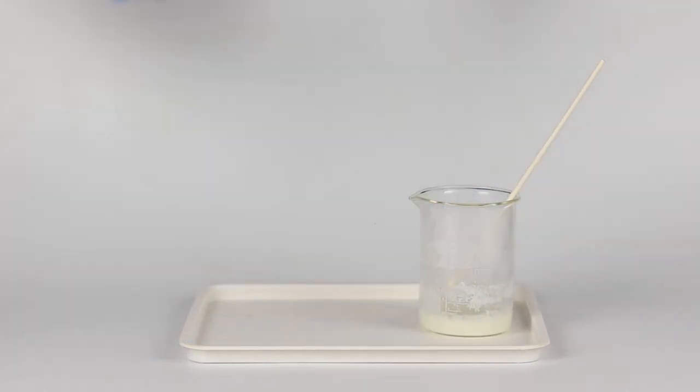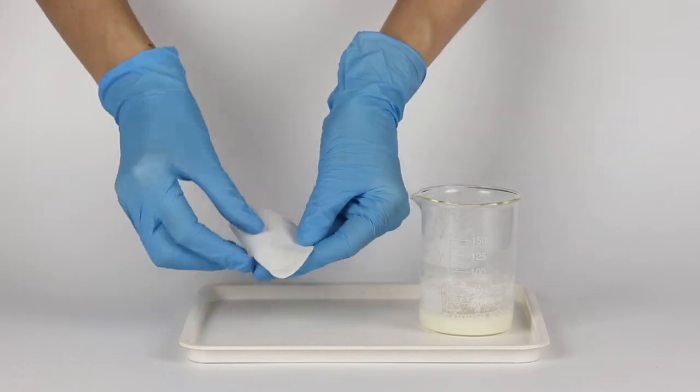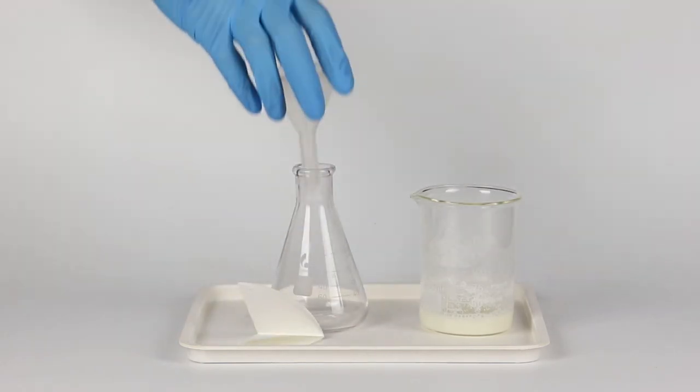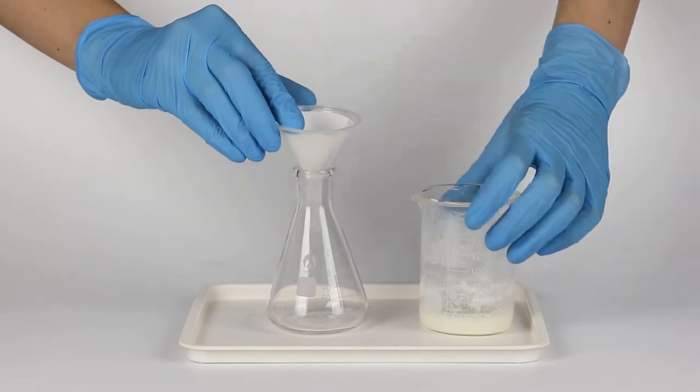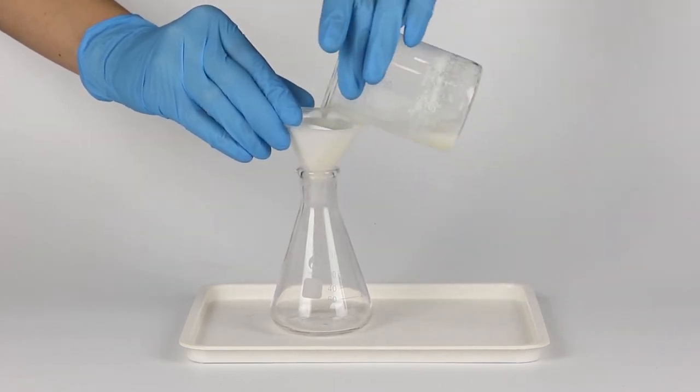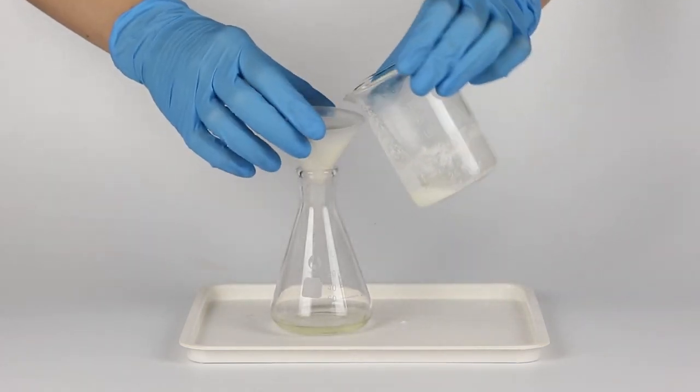Blow out the candles, fold a filter paper as shown here, put it into the funnel, and pour the curdled milk into it.